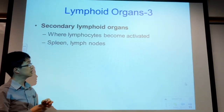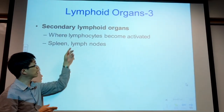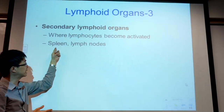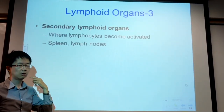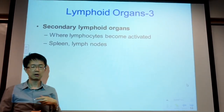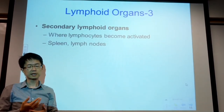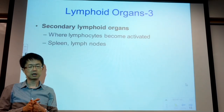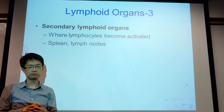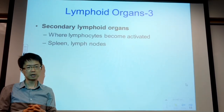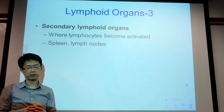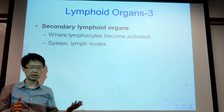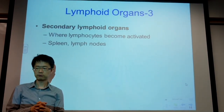Secondary lymphoid organs are where lymphocytes are activated — for example, lymph nodes and tonsils. They are part of the lymphatic system but are not bone marrow or thymus. As long as they are not bone marrow or thymus, we call them secondary lymphoid organs.